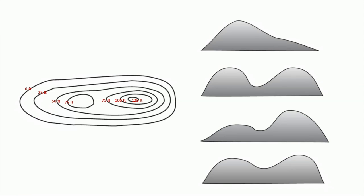Take a look at the topographic image on the left. Which of the four surfaces on the right gives the most accurate representation of this topographic map? The contour lines are separated at 25-foot intervals, with the lowest elevation at 0 feet and the highest elevation at 125 feet. Take a few minutes to choose your answer before moving on. You may pause the video here.